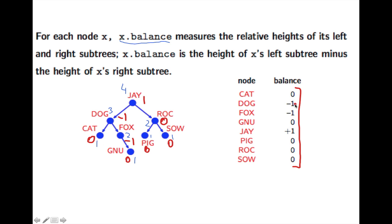Of course these numbers have to be zero, one, or minus one. Otherwise the tree is not height balanced.